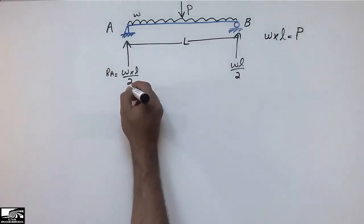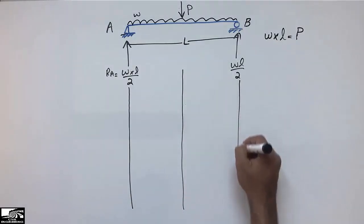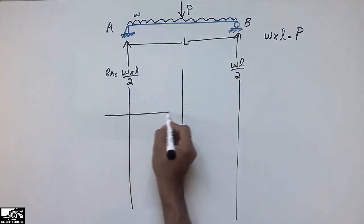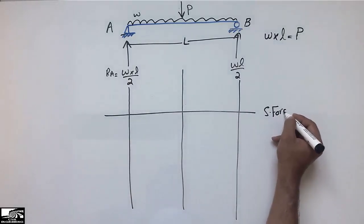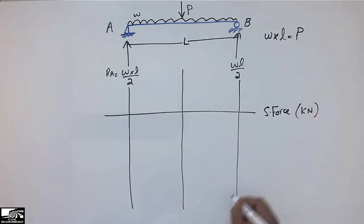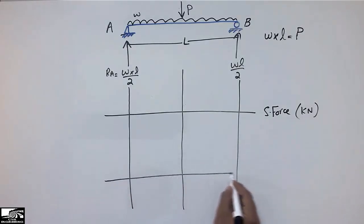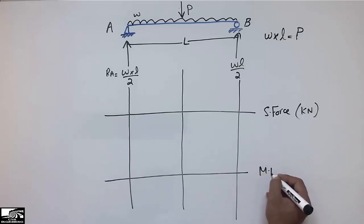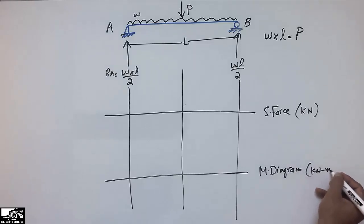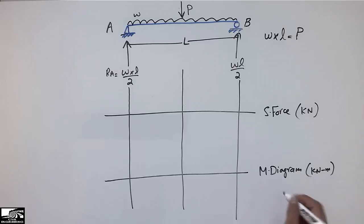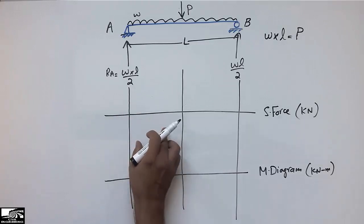Now to find the shear force and bending moment, I draw reference lines — one for the shear force diagram, where values are represented in kilonewtons or newtons depending on the unit system, and another reference line for the moment diagram, where values are in kilonewton-meters, newton-meters, or pound-inches.